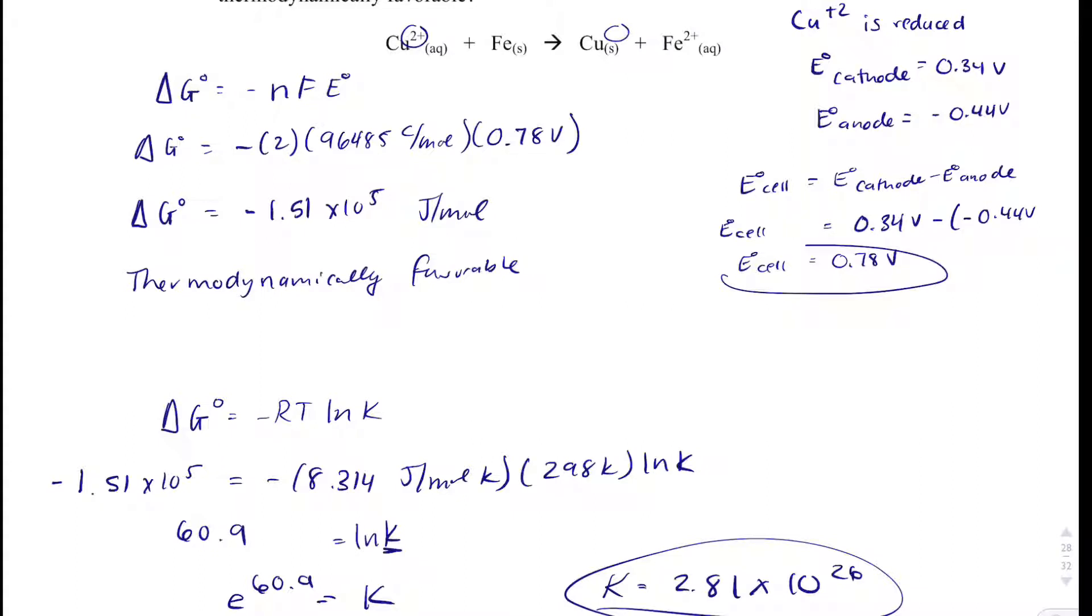Again, all these numbers should be making sense because a thermodynamically favorable reaction will be spontaneous, meaning it will be product favored, which means for K, my numerator should be really big because we're forming a lot of products.